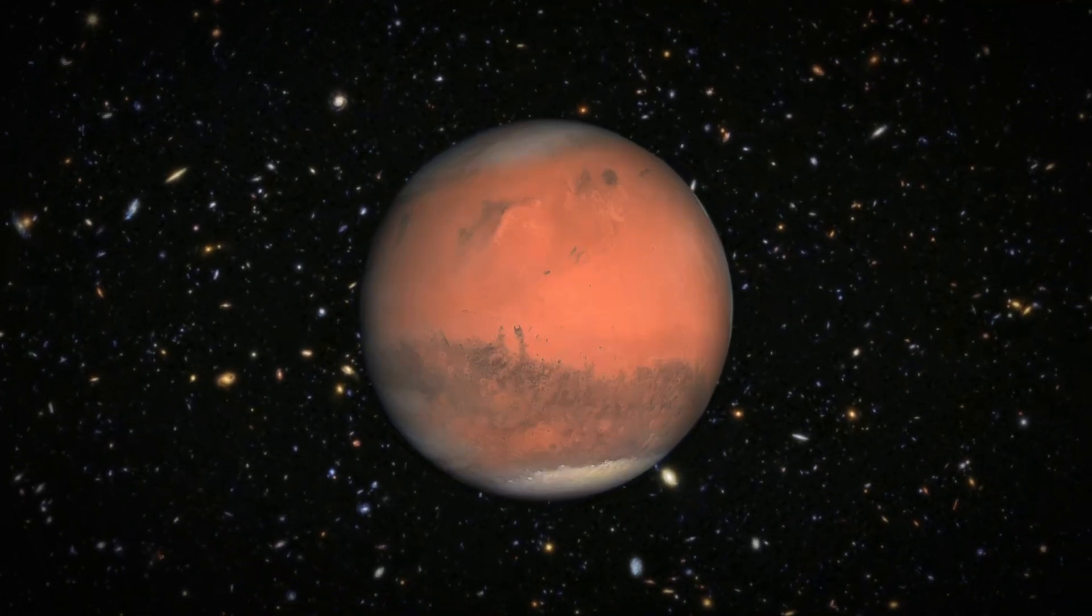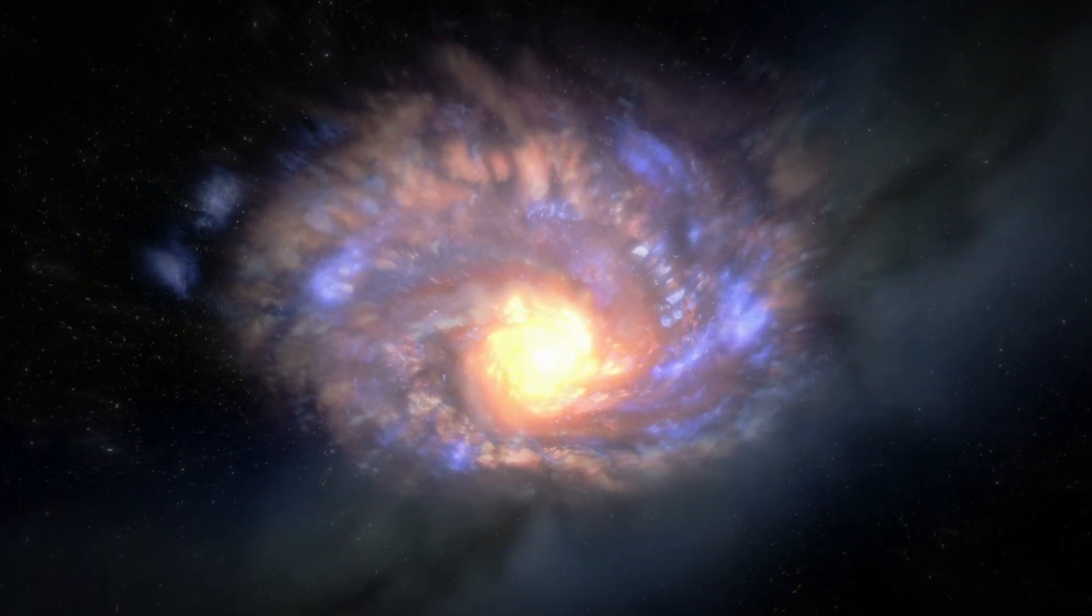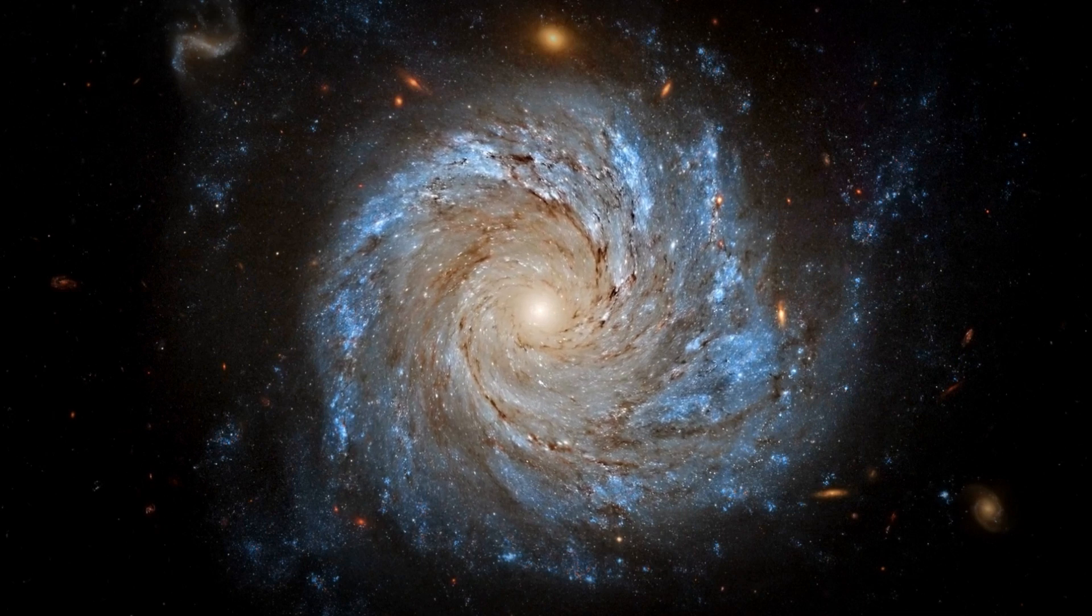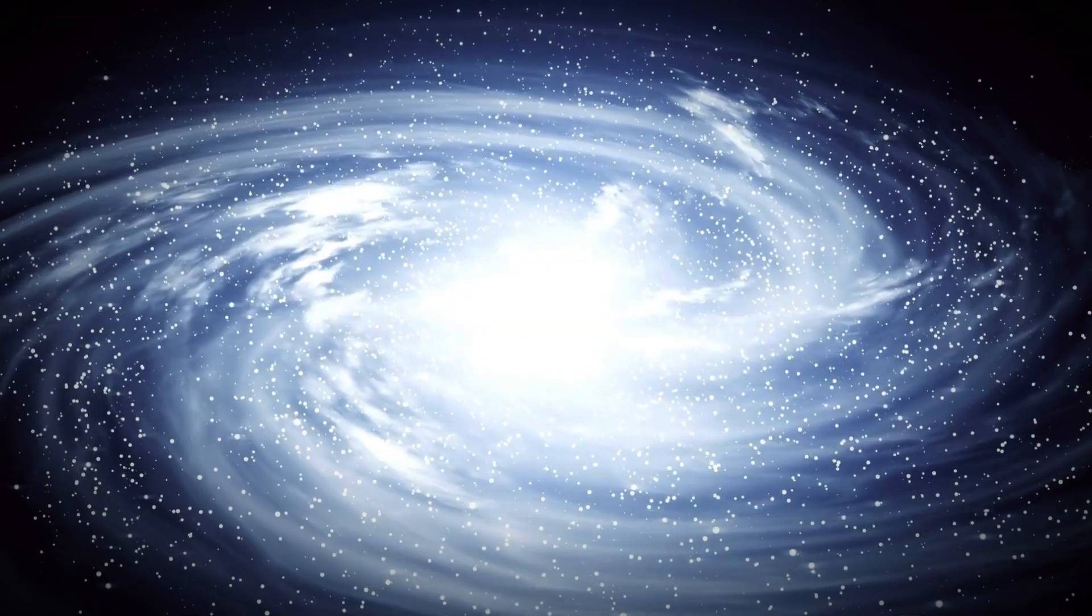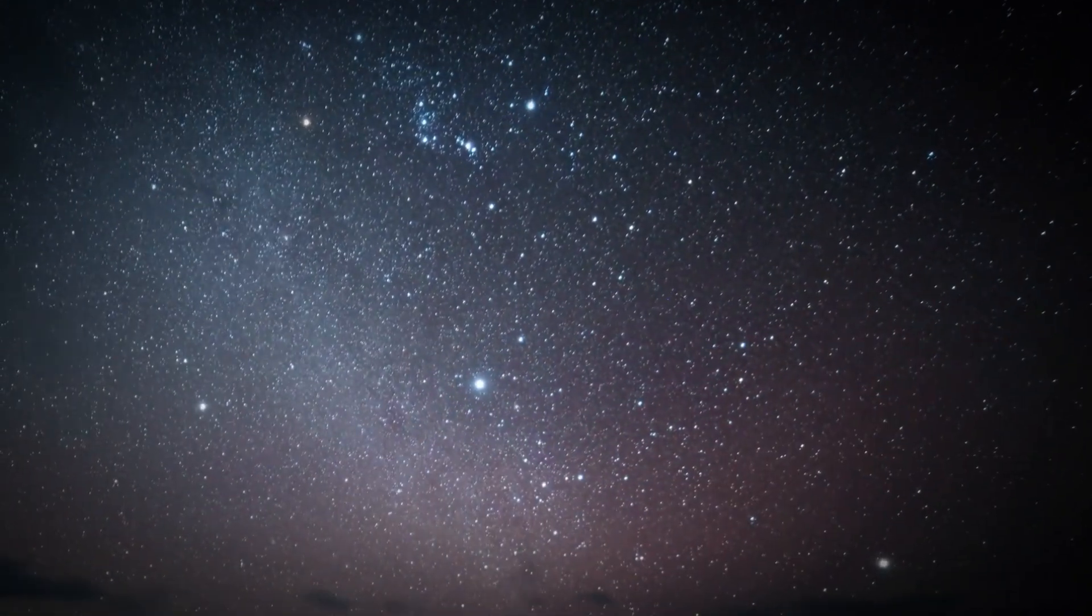Our journey into the cosmos introduces us to a myriad of exoplanets, worlds orbiting stars other than our sun. With a staggering 206 trillion stars dotting the universe, the possibilities for these exoplanets seem limitless. Some even drift through space untethered, like cosmic nomads.